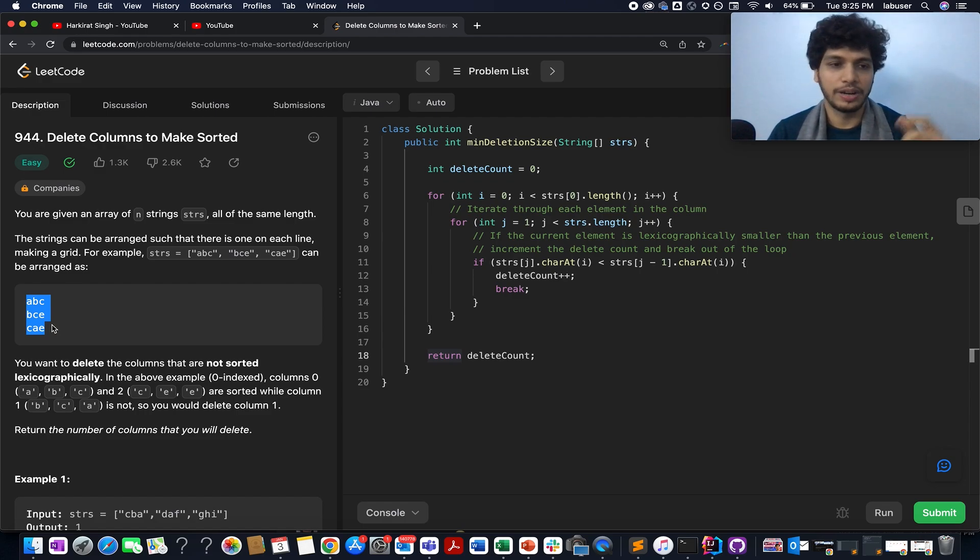And in the end we need to finally return how many columns do we need to delete. For example, here if I iterate from A, B, C, you can see that this is in lexographically sorted order.